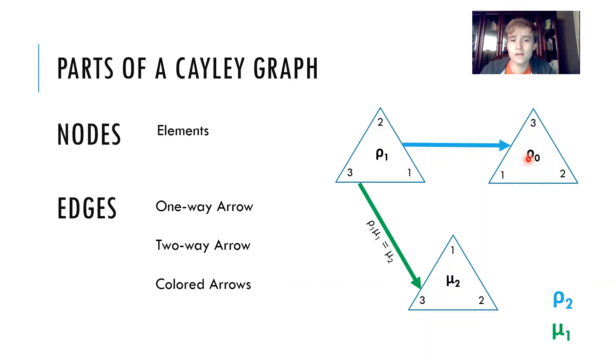We'll color code the arrows to indicate which element we're operating with. If we're color coding it green, I color code this one green, so this means rho one times mu one, and that results in mu two. We can also do mu two times mu one, and that results in rho one. We can go back and forth because of the property that mu one times mu one inverse equals e. Whenever we have that property, we can just combine that into one line.